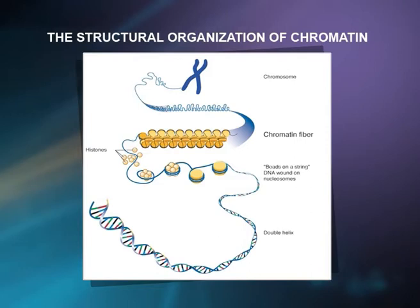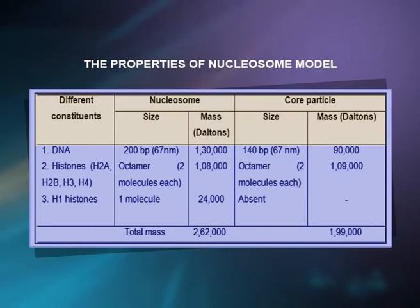The properties of the nucleosome model are presented in a table. The different constituents consist of: first, DNA with a size of 200 base pairs and a mass of 130,000 Daltons. The core particle has a size of 140 base pairs and a mass of 90,000 Daltons. The second constituent, histones, includes H2A, H2B, H3, and H4 — an octamer consisting of 2 molecules each, with a mass of 19,000 Daltons.